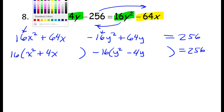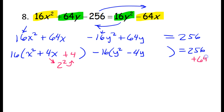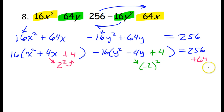Now it's time to complete the square. Half the middle squared — half of 4 is 2, and 2 squared is 4. To balance it out, I need to recognize that this is really 16 times 4, which is 64, so I need to add 64 to the other side. For the next term, half of negative 4 is negative 2. If I square it I get positive 4. Negative 16 times positive 4 is negative 64, so I'm going to put negative 64 on the other side to balance out that change.